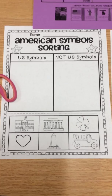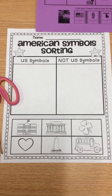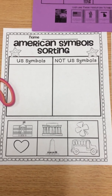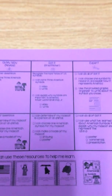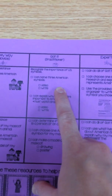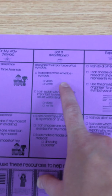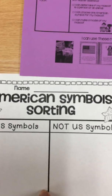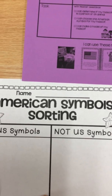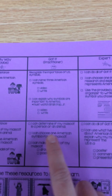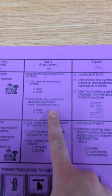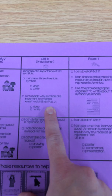This activity might not take you very long, but you want to make sure that you really understand the American symbols. You're going to go to the got it section on your rubric, and right here it says I can name three American symbols. There are three American symbols on this paper and you're going to do your best to see if you can identify all of them to be a got it. Under the got it section it also says that I can explain why symbols are important to America.